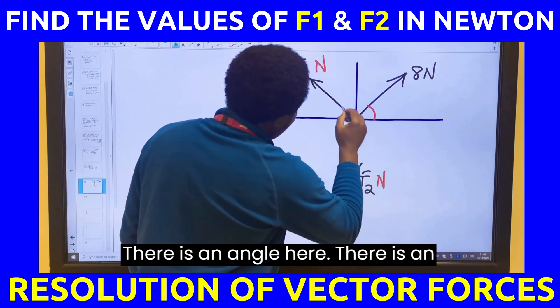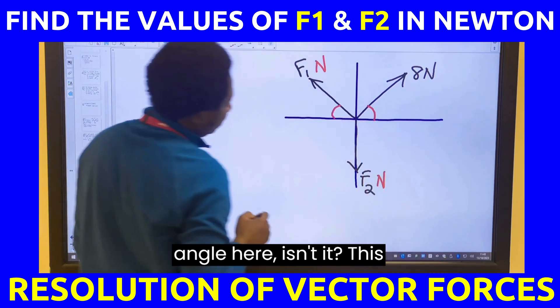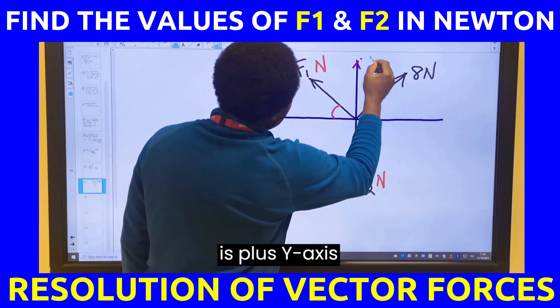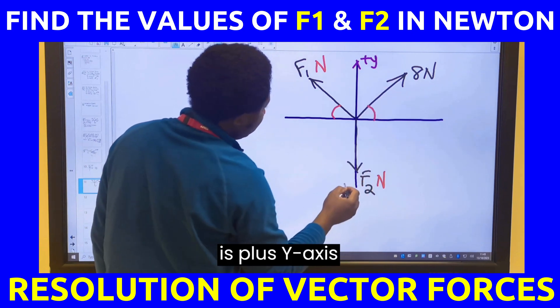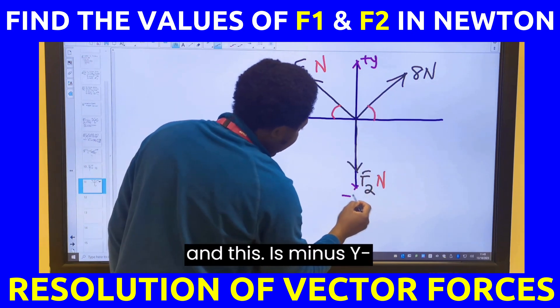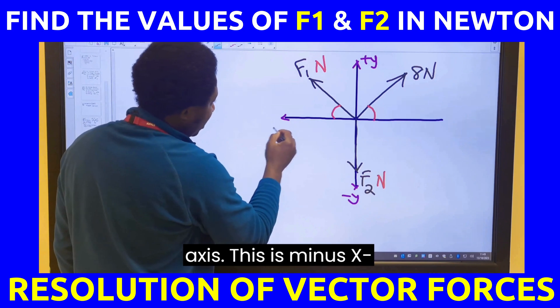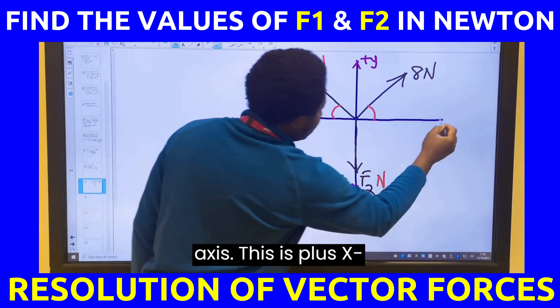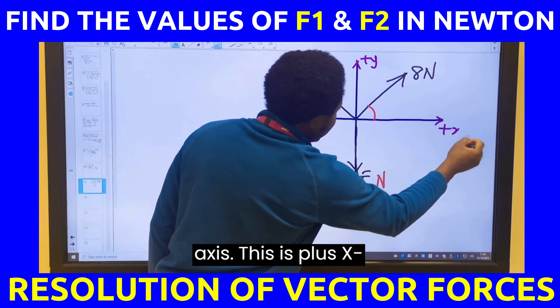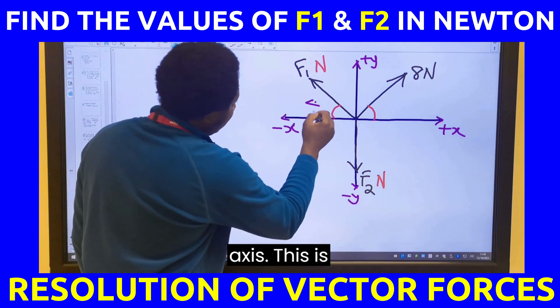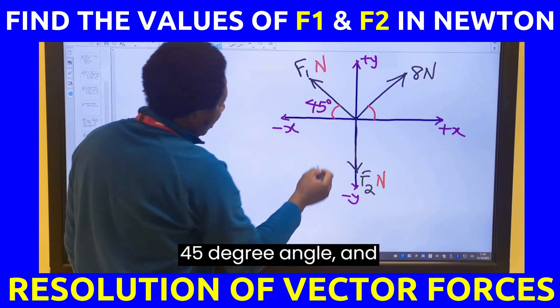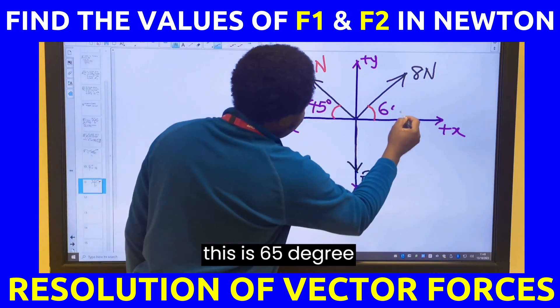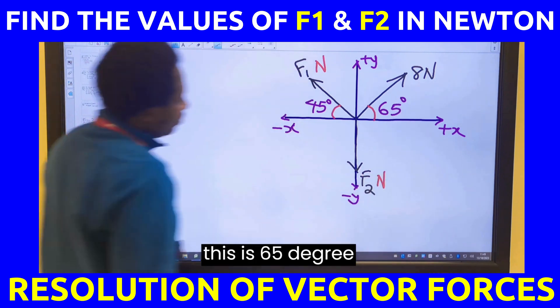There is an angle here. There is an angle here. This is plus y-axis and this is minus y-axis. This is minus x-axis. This is plus x-axis. This is 45 degree angle and this is 65 degree angle.